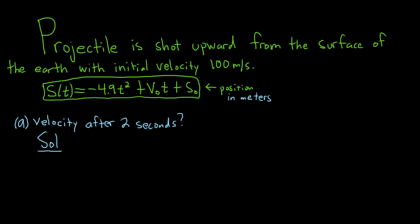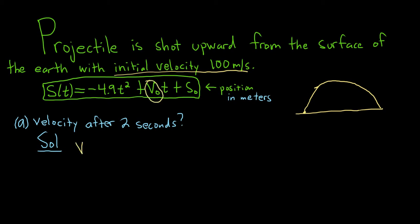Let's think about what's happening in the problem. Here's the earth, and there's a projectile going up from the surface with initial velocity 100 meters per second. It creates some parabolic shape and then hits the ground. The initial velocity V₀ is equal to 100 because it's going up — if it was going down it would be negative 100. S₀, the initial position, is 0 since it's being shot from the surface of the earth. So now we can rewrite our position function.